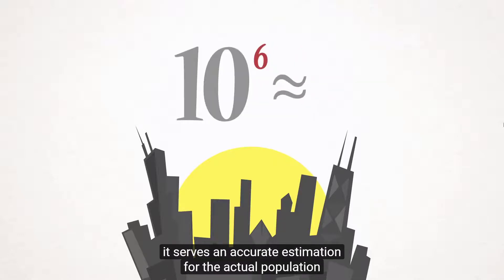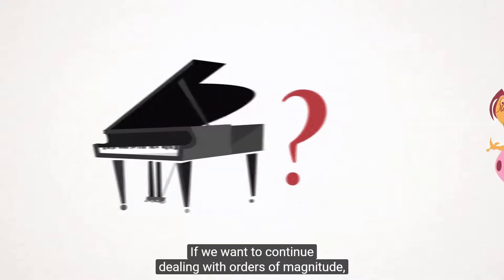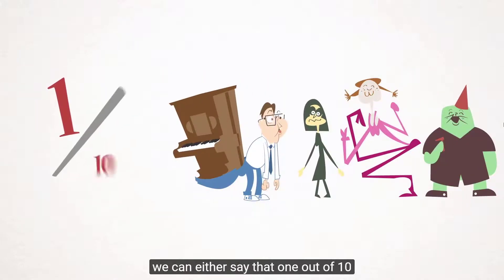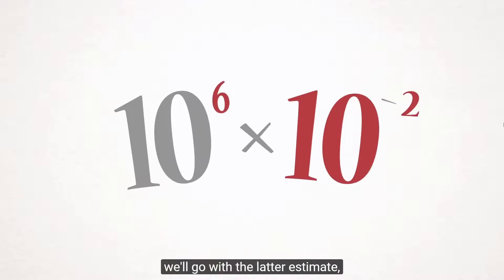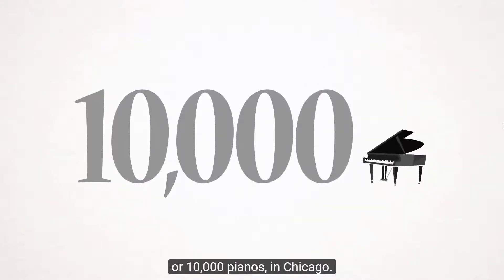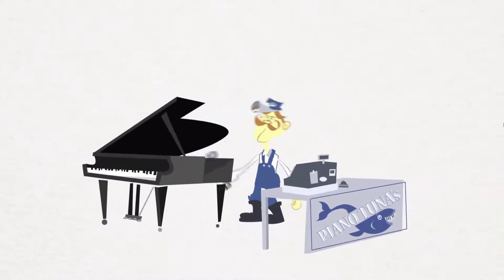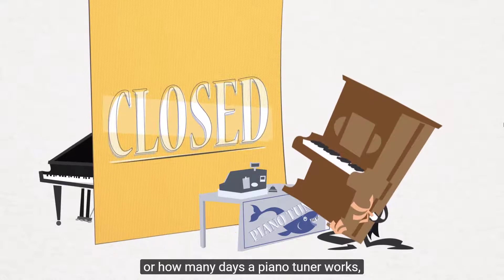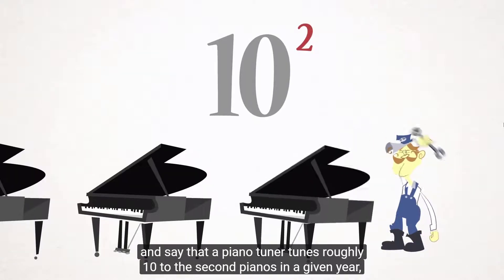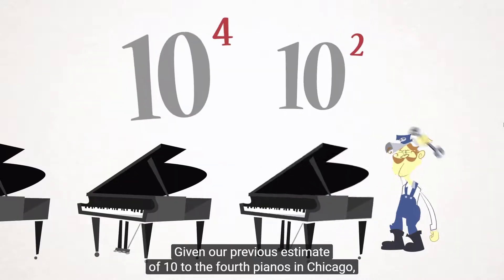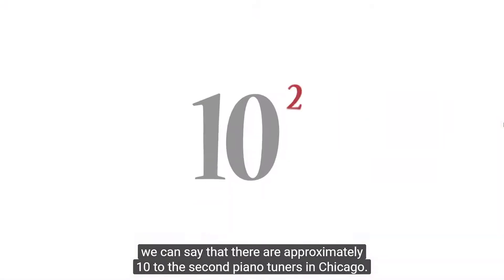While this doesn't tell us exactly how many people live there, it serves as an accurate estimation for the actual population of just under 3 million people. So if there are approximately 10 to the 6 people in Chicago, how many pianos are there? We can either say that 1 out of 10 or 1 out of 100 people own a piano. Given that our estimate of the population includes children and adults, we'll go with the latter, which estimates approximately 10 to the 4th, or 10,000 pianos in Chicago. With this many pianos, how many piano tuners are there? We think in orders of magnitude and say that a piano tuner tunes roughly 10 to the 2nd pianos in a given year — approximately a few hundred pianos. Given 10 to the 4th pianos and each tuner handling 10 to the 2nd pianos per year, there are approximately 10 to the 2nd piano tuners in Chicago.